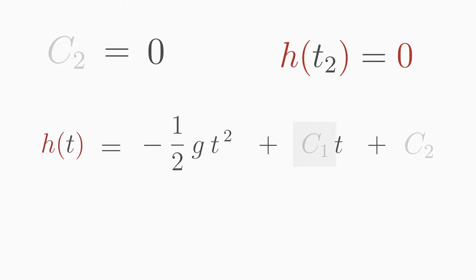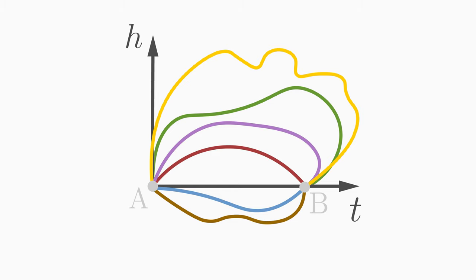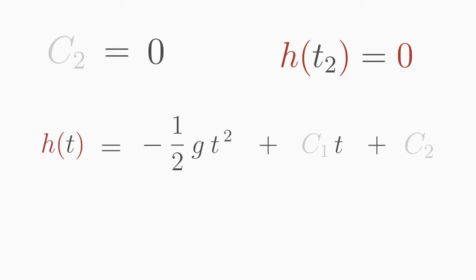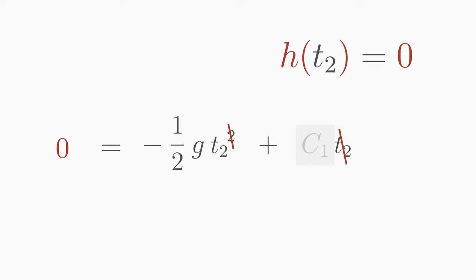To find out the constant c1 we need a second boundary condition. We know that the path h ends at the point B. The point B corresponds to the time t2 at which the particle has landed on the ground at h2 equals zero. So insert t2 for t and zero for h. Rearrange for the constant c1 and you get c1 is equal to one half times g times t2.